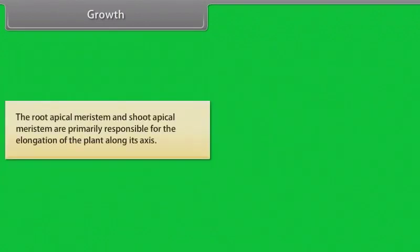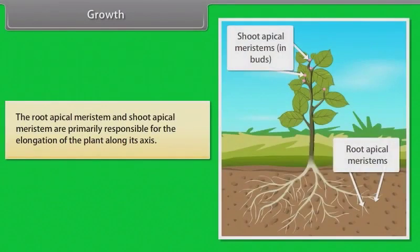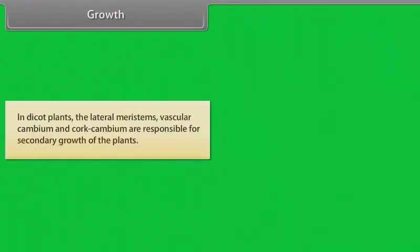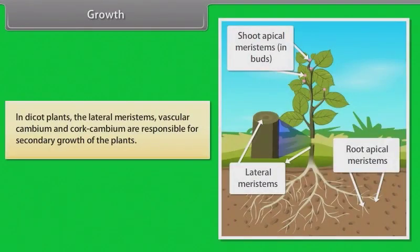The root apical meristem and shoot apical meristem are primarily responsible for the elongation of the plant along its axis. In dicot plants, the lateral meristems — vascular cambium and cork cambium — are responsible for secondary growth of the plants.